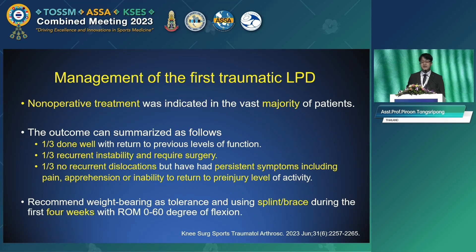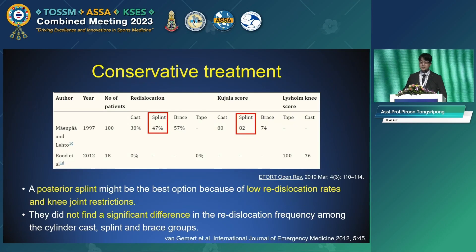For management of first traumatic lateral patella dislocation, non-operative treatment is indicated in the vast majority of patients. Outcomes: one-third do well and return to previous function; one-third develop recurrent instability requiring surgery; one-third have no recurrence but persistent symptoms including pain, apprehension, and giving-way episodes. Recommended weight-bearing as tolerated using a splint or brace for the first four weeks, with range of motion 0 to 60 degrees. A hinged knee brace may be the best option due to low re-dislocation rate.